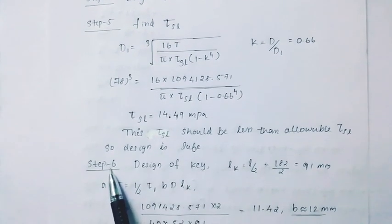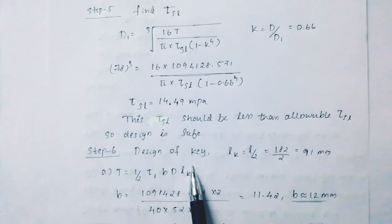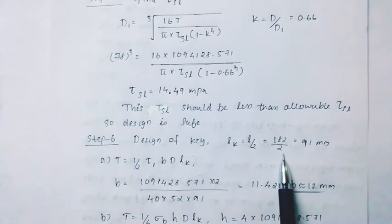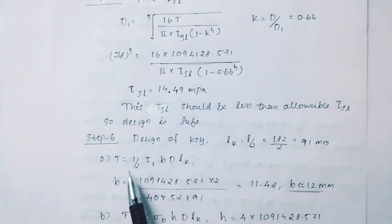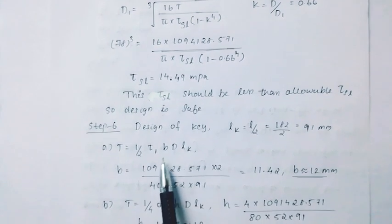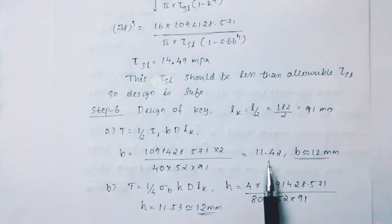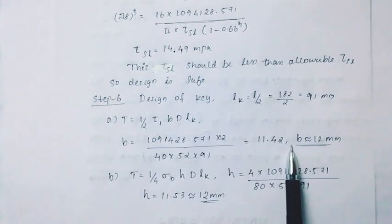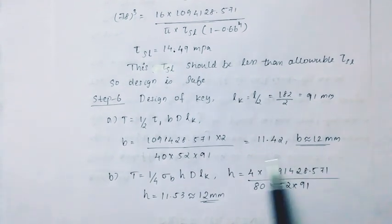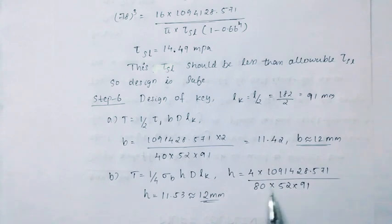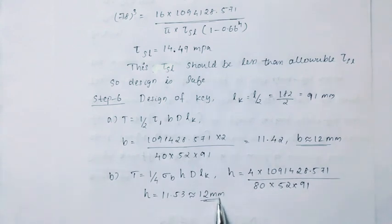Step 6: Design of key. Key length L_k = L/2 = 182/2 = 91mm. From the shear equation (1/2 × B × d × L_k), solving gives B = 12mm. From the crushing equation (1/4 × σ_c × H × d × L_k), solving gives H = 11.53mm, which we round up to 12mm.